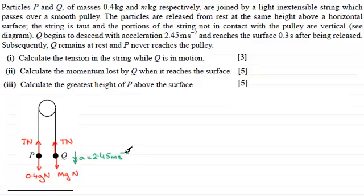Now because the string is inextensible, as soon as Q starts to move, P will start to move and so it'll have exactly the same acceleration, only in the upward sense. I'll just call it a, a being exactly the same as what we've got here, 2.45 meters per second squared.